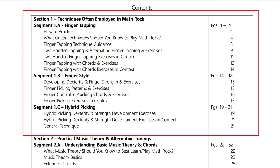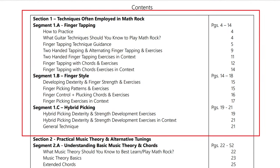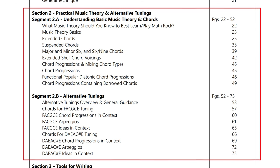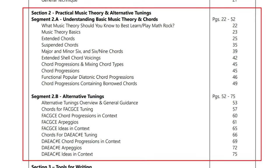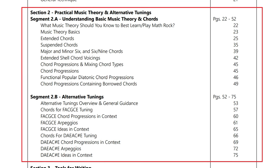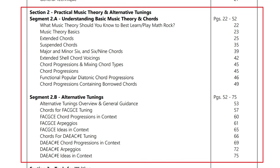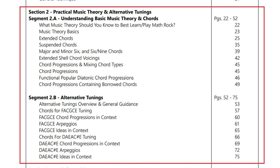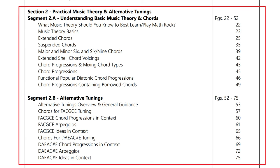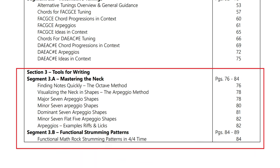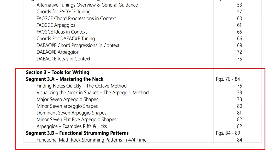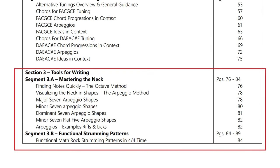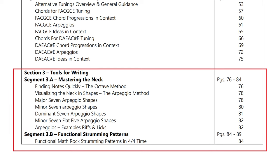Now let's get into the geeky details of each section. I just want to show what my aims were and how these sections can help you. The book is divided into three sections. Section one is to help you learn the commonly used techniques by math rock guitarists. Section two teaches some basic music theory that I think is useful for learning math rock and songwriting — there's also a good generous section on chords and a wealth of information about alternative tunings. Section three is designed to move on from theory and techniques and put that into practice, giving you tools for songwriting.